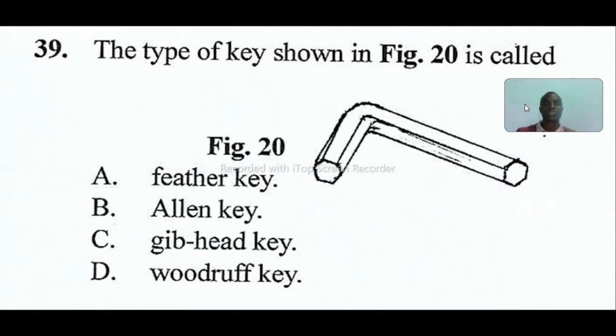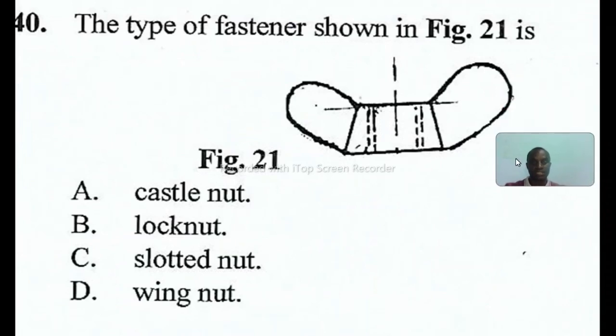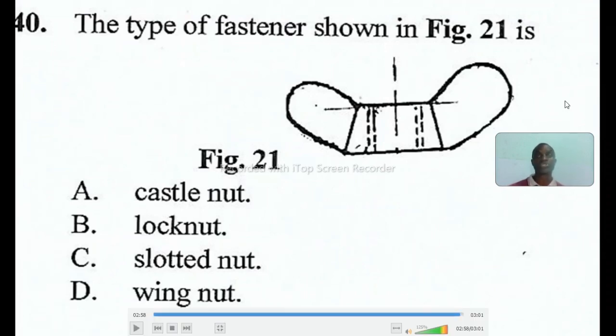Question thirty-nine: the type of key shown in figure twenty is called Allen key, answer B. Question forty: the type of fastener shown in figure twenty-one is wing nut. The answer is D. I hope you enjoyed what you have just seen. If this content has blessed you, please share it, comment, and like. Subscribe to my channel and click the notification button. The only way you can appreciate me is to patronize those books I have shown you.